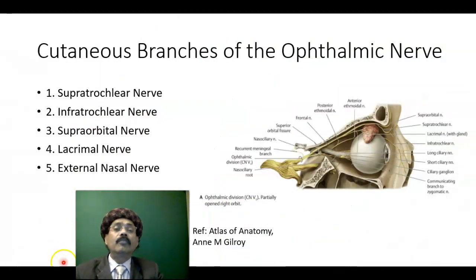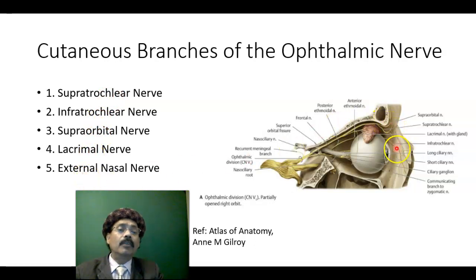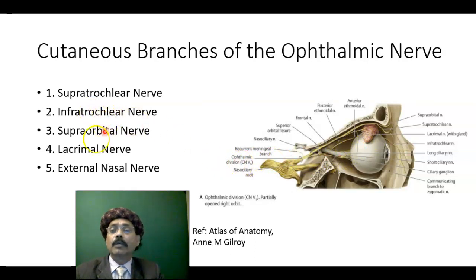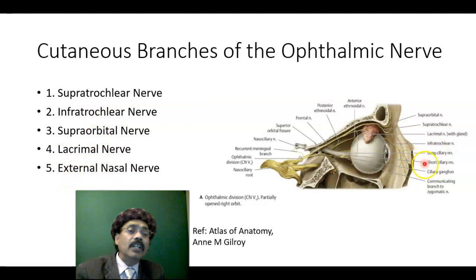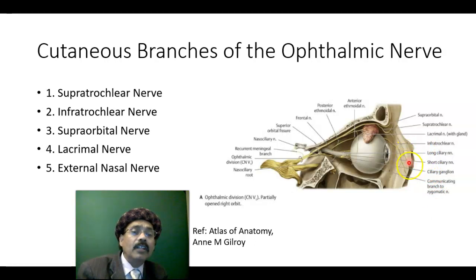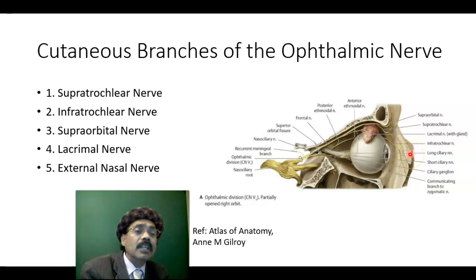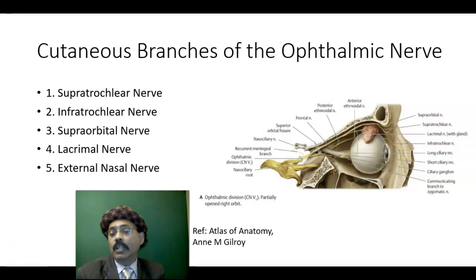The cutaneous branches of the ophthalmic nerve include the supratrochlear, infratrochlear, supraorbital, and lacrimal nerves. The external nasal nerve is a continuation of the anterior ethmoidal nerve and is a branch of the ophthalmic division of the trigeminal nerve.